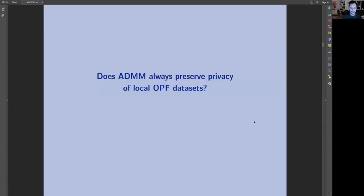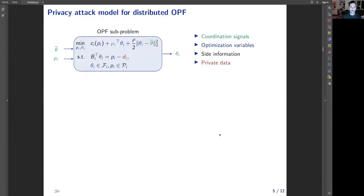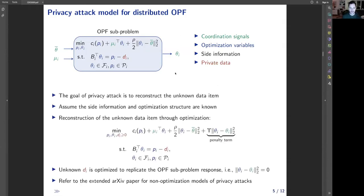The question is whether these ADMM algorithms preserve privacy. To answer this question, we consider optimal power flow subproblem as a mapping from input coordination signals to output coordination signals, and we consider a privacy adversary tries to reconstruct the private data contained within the subproblem.